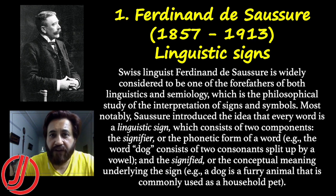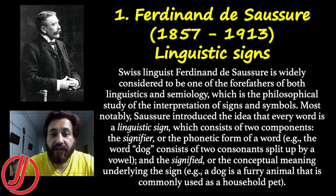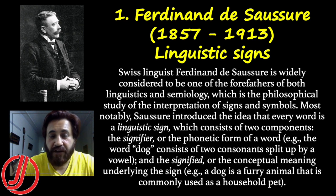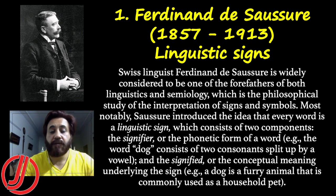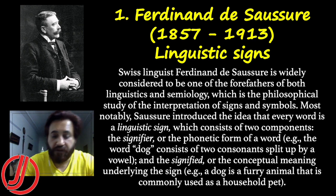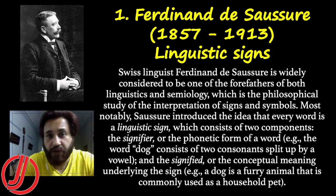Saussure gave the linguistic sign concept, which has two parts: the signifier and the signified. He also introduced the syntagmatic and paradigmatic concepts, as well as the synchronic and diachronic distinction. That is why he is known as the father of linguistics.